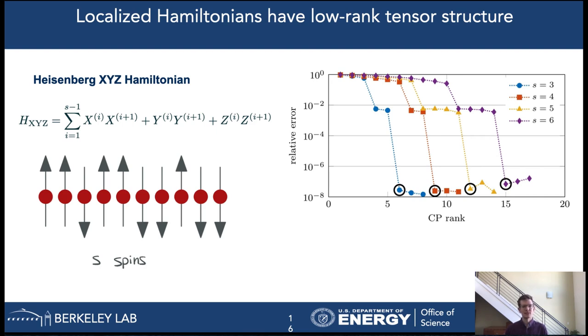We observe that the numerical tensor rank decomposition approximates the model up to 8 digits of accuracy when we use the exact rank. When we try to compress the tensor rank, the relative error increases rapidly, but still a reasonable approximation can be obtained with a reduced rank. Compressing the rank leads to shallower circuits which utilize fewer quantum gates. Localized Hamiltonians such as this Heisenberg model perfectly fit in the format that we have proposed in this presentation.